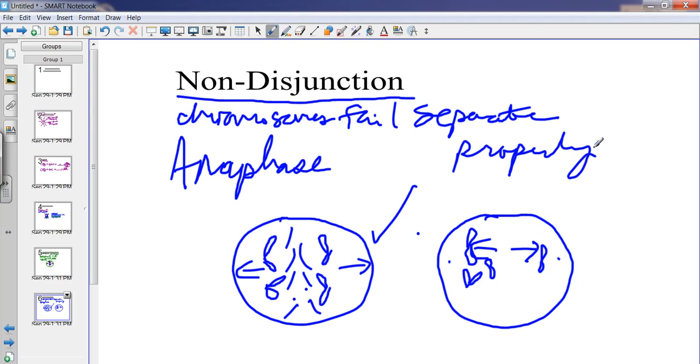So non-disjunction is a source of variation because the chromosomes fail to separate properly. And it's important to know that it doesn't have to be necessarily an entire chromosome that fails to separate.